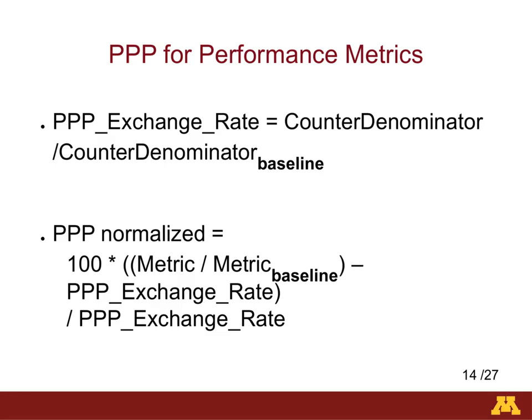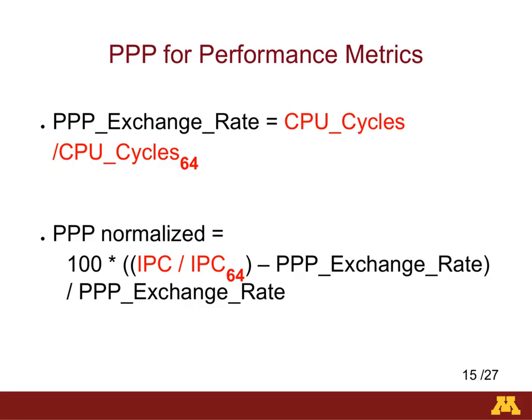Baseline values are the values of the performance counter when the baseline run is used — in this case, the 64-thread run. For the metric ratio, it is equivalent to the Big Mac price ratio: we divide the performance metric you want to compare by the baseline 64-thread performance metric result. This is an example using IPC rates. To compute the PPP normalized rate for the instructions per cycle metric, we use the CPU cycles for the PPP exchange rate and the IPC rates for the metric ratio.